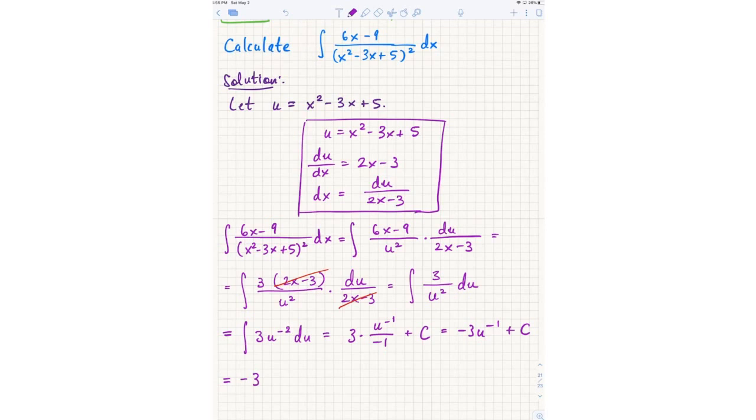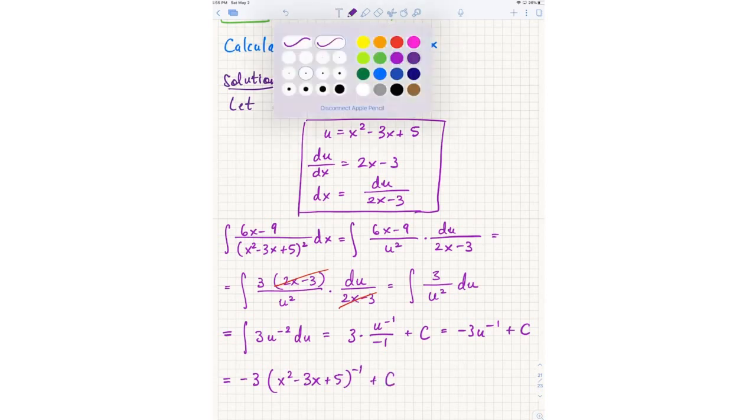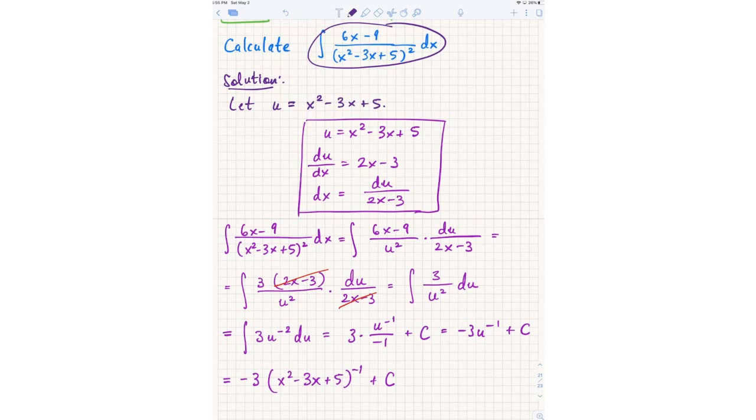So going back to x, I get negative 3x squared minus 3x plus 5 to the negative 1 plus c. Notice I did go back to x because there's no limits of integration. In other words, I just want to find an antiderivative of this in terms of x. So the final answer should be a function of x.